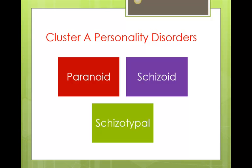Let's talk about cluster A personality disorders. There are three distinct personality disorders in cluster A, and what I'm going to try and do is point out the most common things you're going to see with this group. Then when we speak about each one, I'm going to try and give you a character in your mind that you can visualize — associating that disorder with that character.